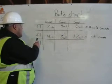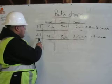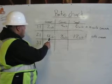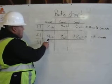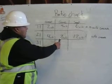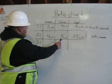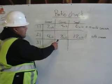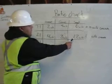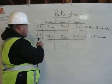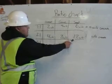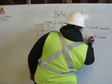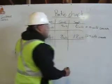Here I have a 2 to 1 ratio. Here I have 4 cubic feet of cement — I multiplied 2 times 2, gave me 4. Here I have 8 cubic feet of gravel — I multiplied 2 times 4, gives me 8. Here I have 12 cubic feet of sand — I multiplied 2 times 6, gave me 12. That equals 24 cubic feet of concrete.